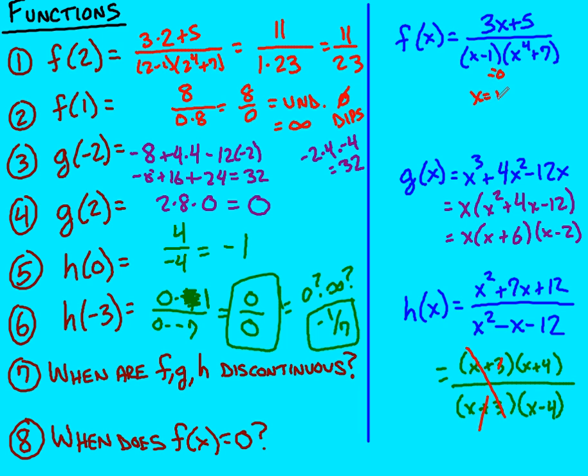When does this guy equal zero? Well, that's when x equals one. When does this equal zero? x to the fourth would equal negative seven. Well, anything to an even power can never be negative. So this part will never equal zero. So the only time f is discontinuous is when x equals positive one.